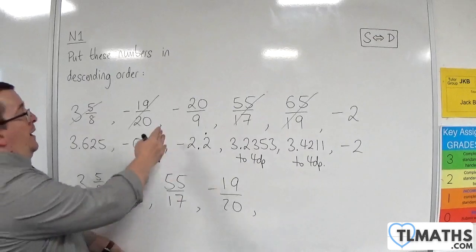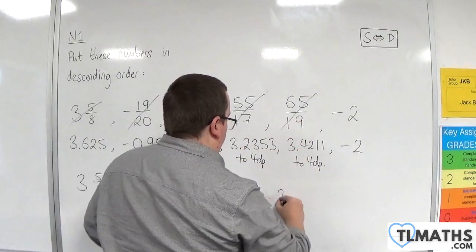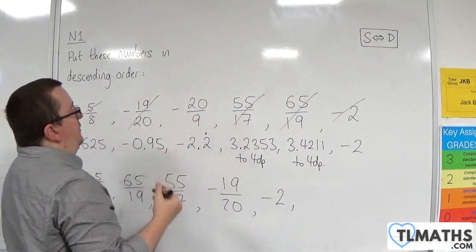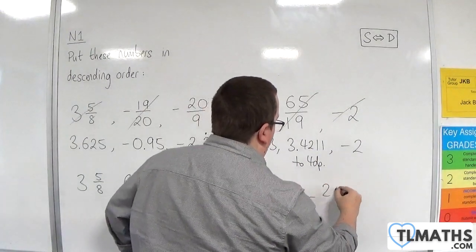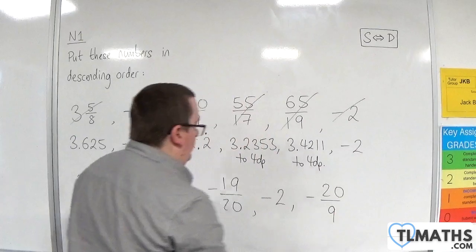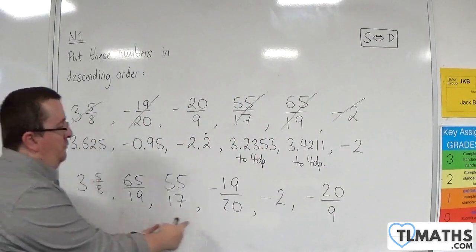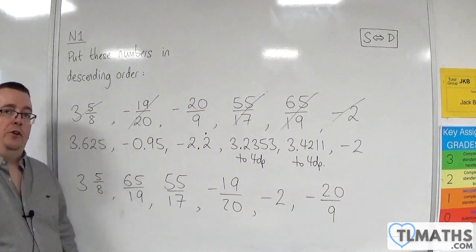Right, then we're going to have the minus 2. And so the most negative of all of them is the minus 20 over 9. And so we've gone from the largest to the smallest, so in descending order.